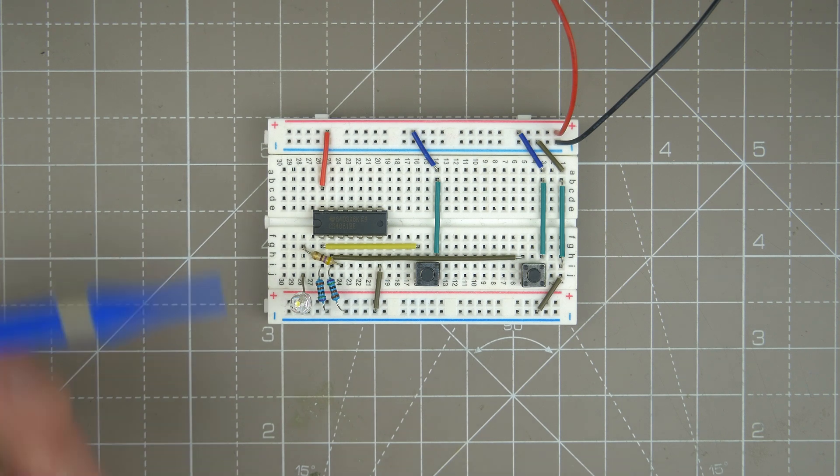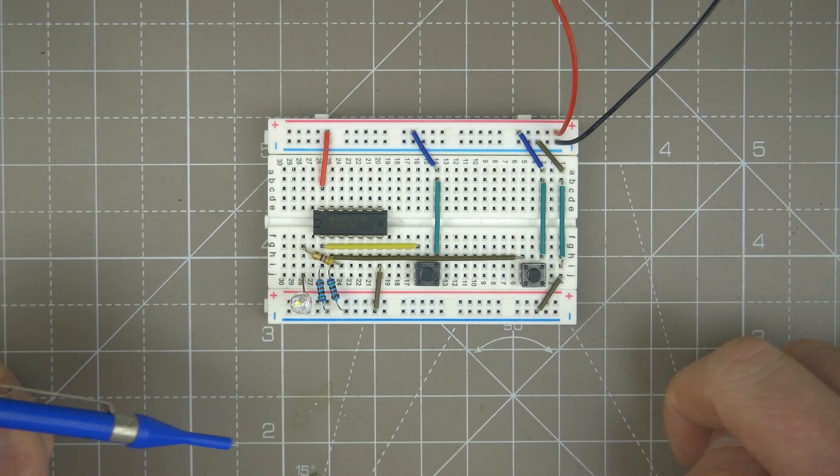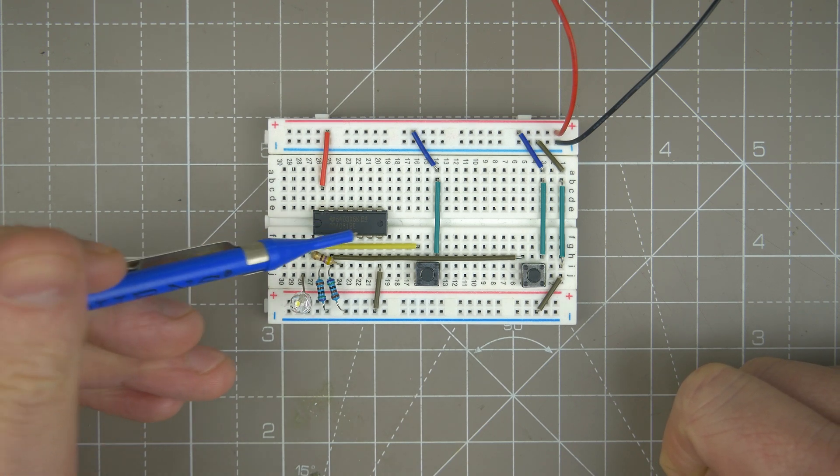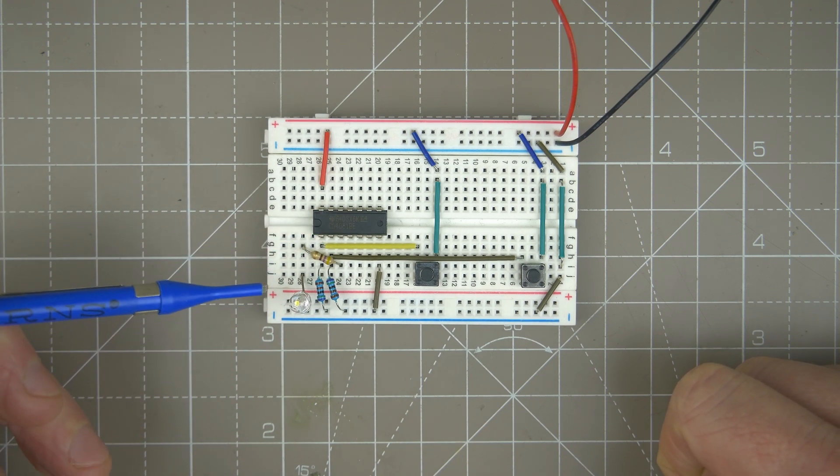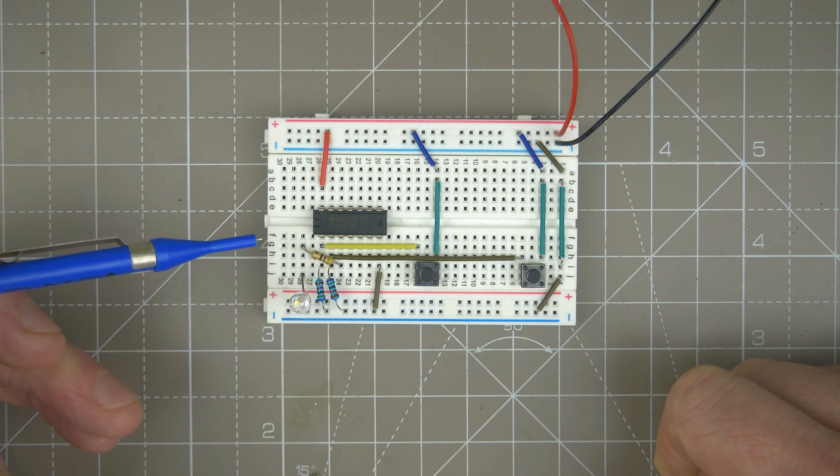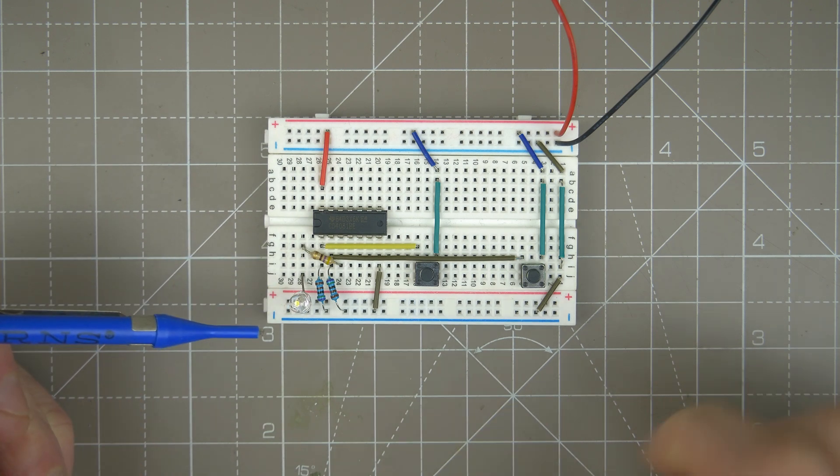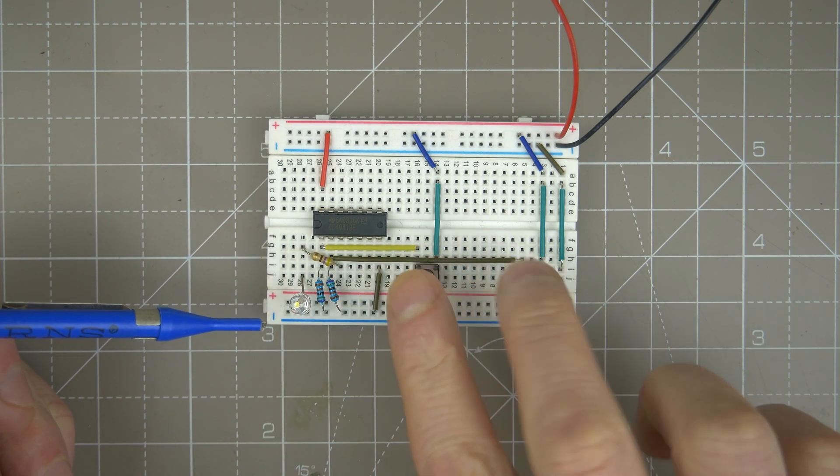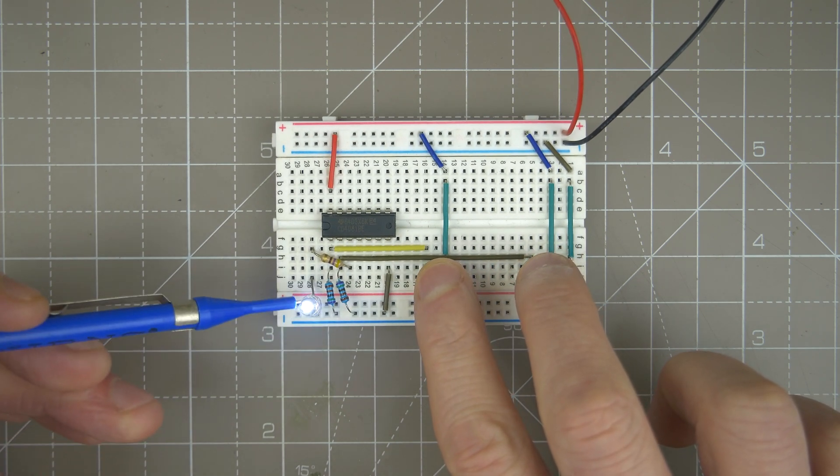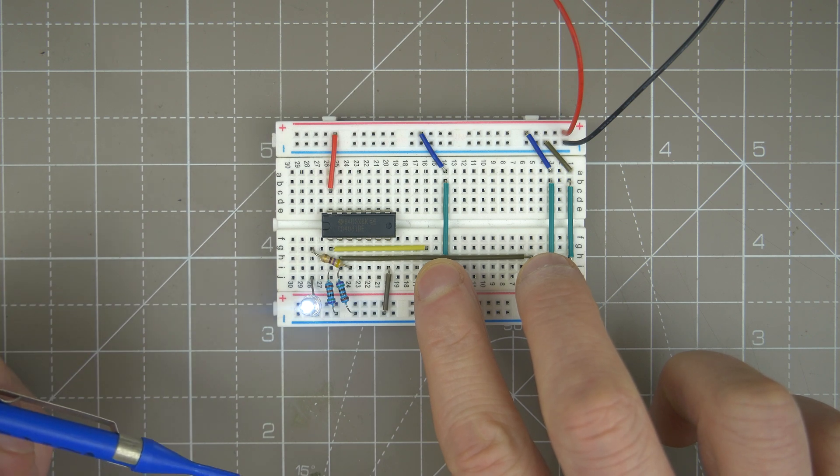An AND gate needs two inputs to make an output, and this one has four different AND gates in it. We have two inputs over here and then one output on pin three. Currently, we've got an LED hooked up to that with two inputs on buttons there. When I press both down, we get an illuminated LED.